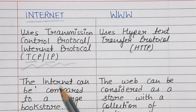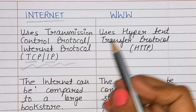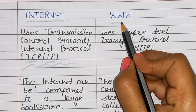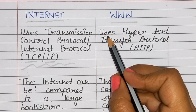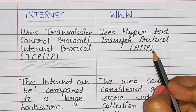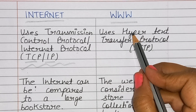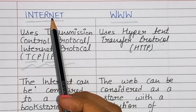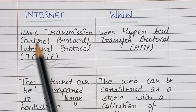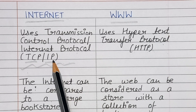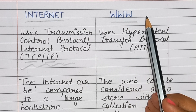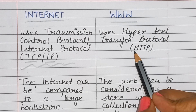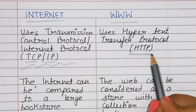Internet uses TCP/IP — Transmission Control Protocol / Internet Protocol — while the world wide web uses HTTP — Hypertext Transfer Protocol.